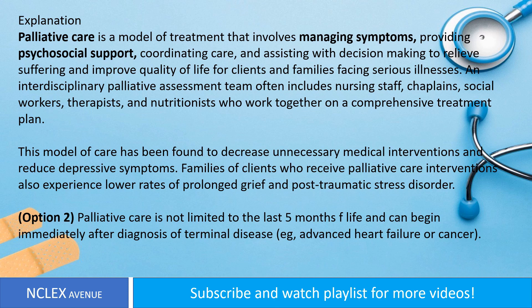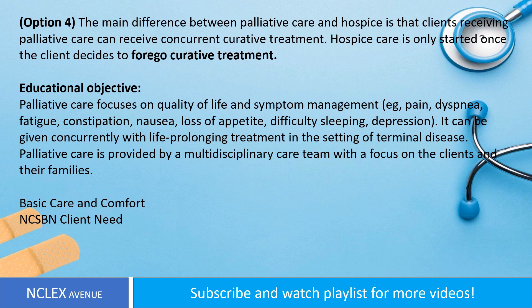Option 2: Palliative care is not limited to the last 6 months of life and can begin immediately after diagnosis of terminal disease, e.g., advanced heart failure or cancer. Option 4: The main difference between palliative care and hospice is that clients receiving palliative care can receive concurrent curative treatment. Hospice care is only started once the client decides to forego curative treatment.